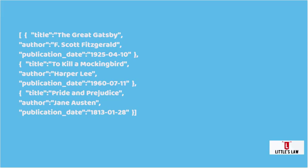Coming back to the book example from the start of the video: in this JSON format, the data is an array of objects where each object represents a book, and each object has three attributes — title, author, and publication date — holding the corresponding values for each book. This JSON data could be sent from a server to a client such as a web browser or mobile browser, where it can be easily parsed and used to dynamically display information about the books on a page.